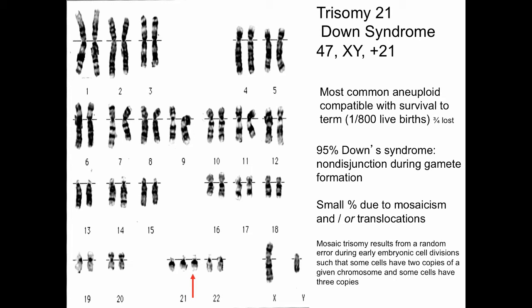Mosaic trisomy results from a random error during embryonic cell division such that some cells have two copies of a given chromosome and some cells have three copies of a given chromosome.